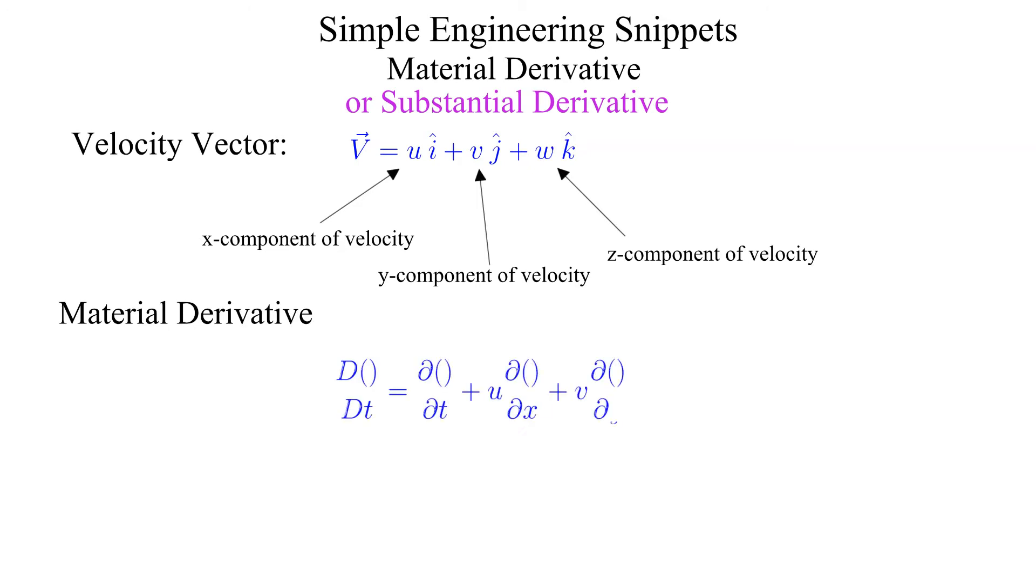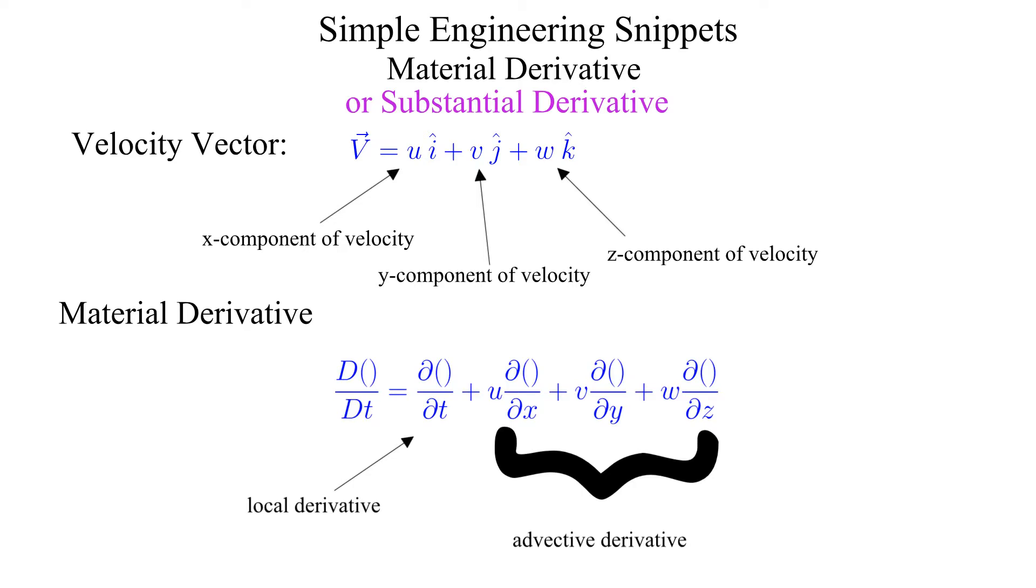The material derivative is typically written with capital letters to readily identify that it is a material derivative. The material derivative consists of two parts, the local time derivative and the advective derivative.